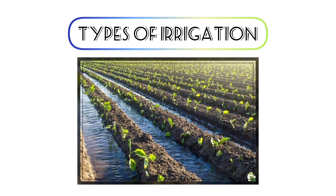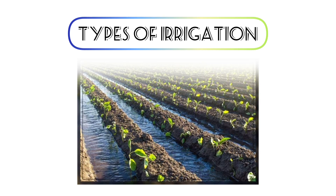Next is sub irrigation, where the surrounding water table is raised to scatter water evenly across the land.